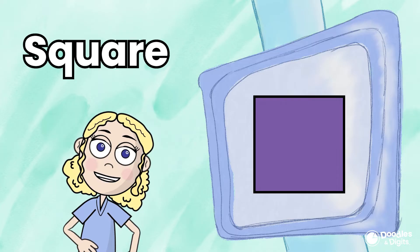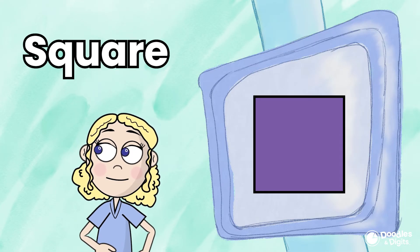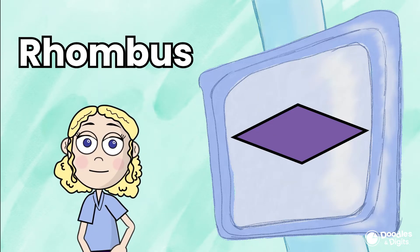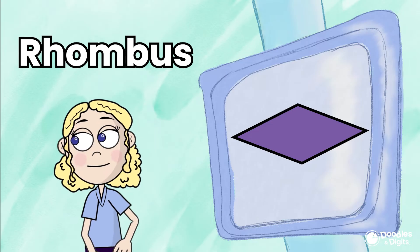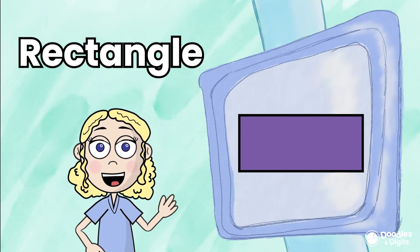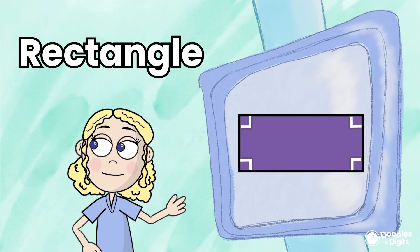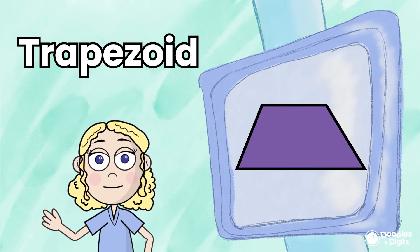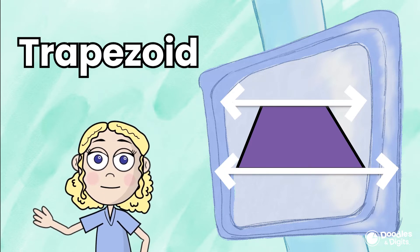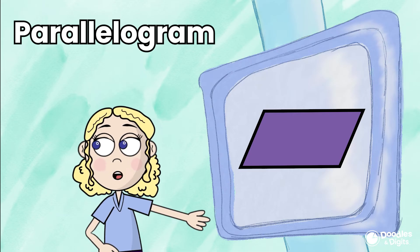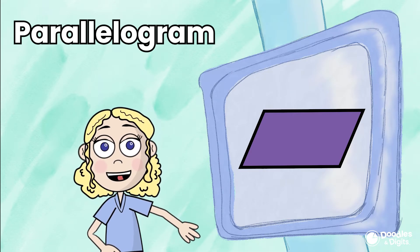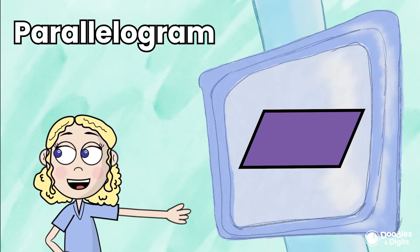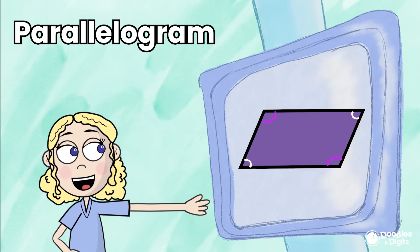A square is a quadrilateral that has four equal sides and four right angles — right angles are also 90 degrees. A rhombus is a quadrilateral that has four equal sides. A rectangle is a quadrilateral that has four sides and four 90-degree angles. A trapezoid — some people also call it a trapezium — is a quadrilateral that has at least one set of parallel sides. A parallelogram is a quadrilateral that has two sets of parallel sides.